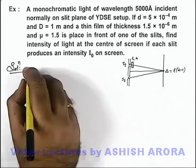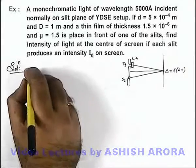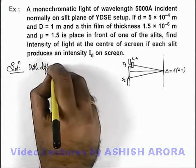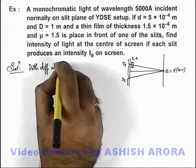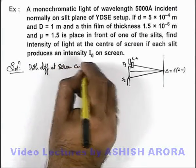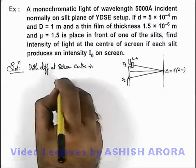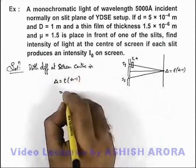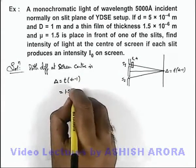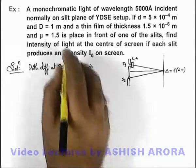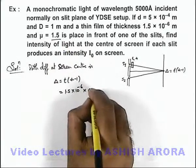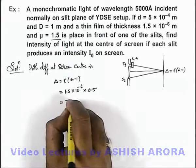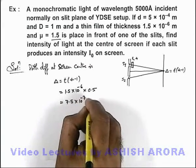We have already calculated in the previous sections that the path difference at screen center is delta = t × (μ - 1). Substituting the values: 1.5 × 10⁻⁶ multiplied by (1.5 - 1), which is 0.5. So we get 7.5 × 10⁻⁷ meters.